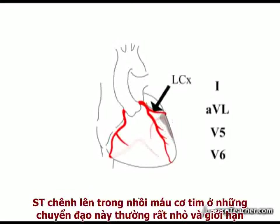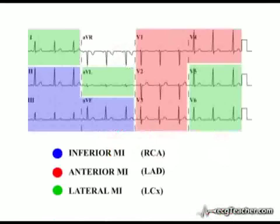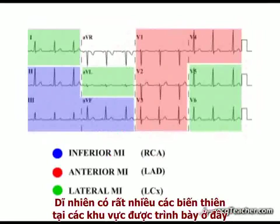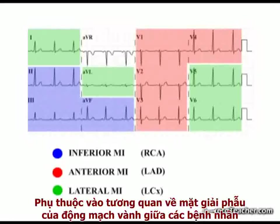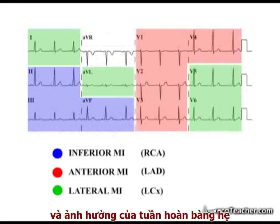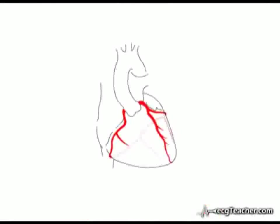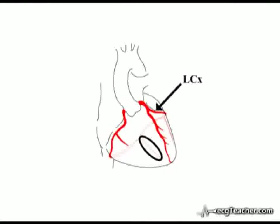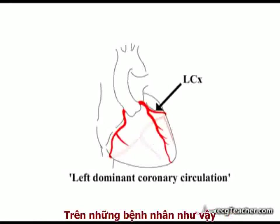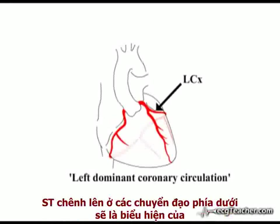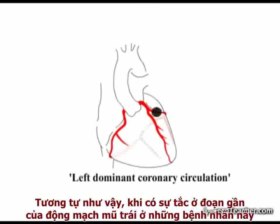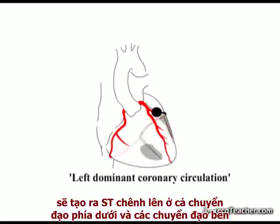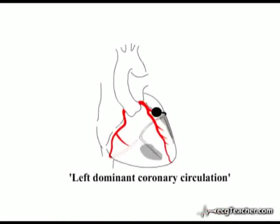Changes of ST elevation MI in these ECG leads are often subtle and are easily missed. Of course, there are many variations on the basic correlations outlined here, depending on variation in coronary artery anatomy between individuals and the impact of collateral formation in patients with a long history of ischemic heart disease. In 10% of individuals, the posterior descending branch supplying the inferior surface of the heart arises from the left circumflex artery rather than the right coronary artery — this is termed a left dominant coronary circulation. In such an individual, an inferior pattern of ST elevation indicates obstruction of the left circumflex. Equally, proximal obstruction of the circumflex in such an individual will produce ST elevation in both the inferior and lateral leads — an infralateral MI.